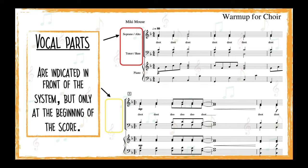Vocal parts are usually divided into soprano, alto, tenor, and bass. In some octavos, more than one part can be notated on one staff, like in this example. In this case, soprano sings the notes whose stems point upwards, and alto sings the notes whose stems point downwards. The same goes for tenor and bass.